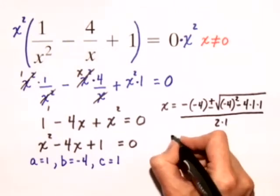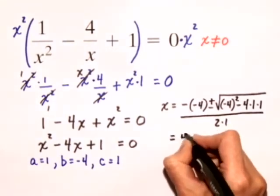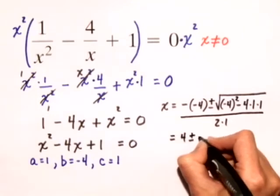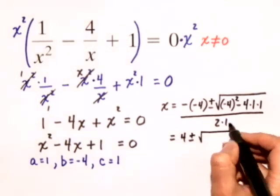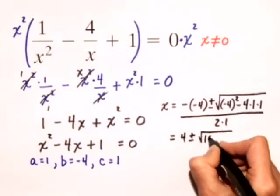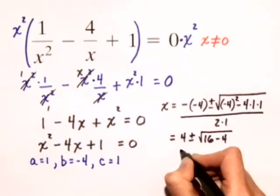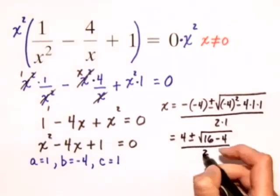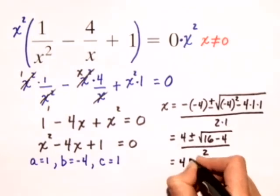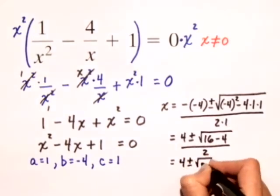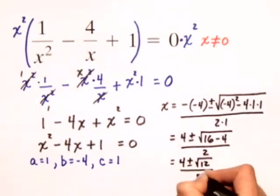We just need to simplify this. So x is equal to positive 4, plus or minus the square root of, when I take negative 4 and square it, I get 16, minus 4, all divided by 2. That simplifies to 4, plus or minus the square root of 12, all over 2.